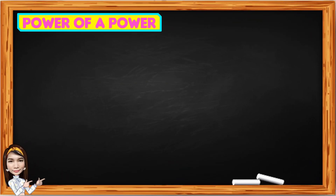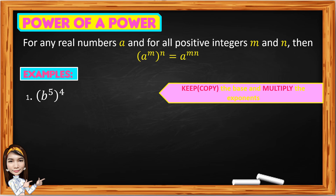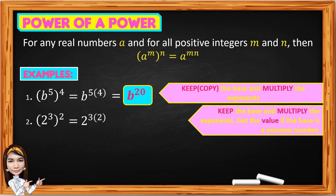Now let's have the power of a power rule. For any real number a and all positive integers m and n, a to the power of m, raised to the power of n, equals a to the power of m times n. Example 1: b to the 5th, raised to the 4th — copy base b, multiply exponents 5 times 4, giving b to the 20th. Example 2: 2 cubed to the power of 2 — copy base 2, multiply exponents 3 times 2 to get 2 to the 6th, which equals 64.